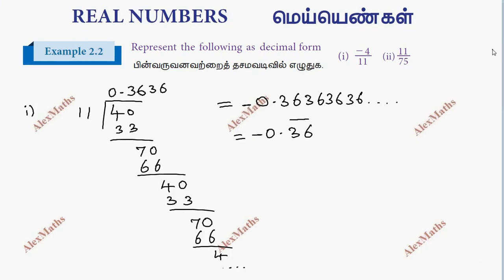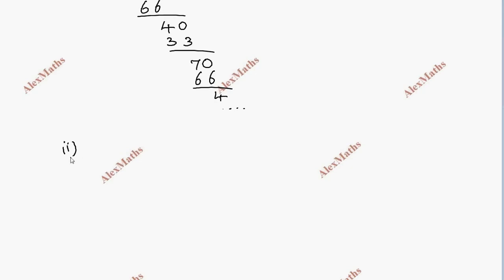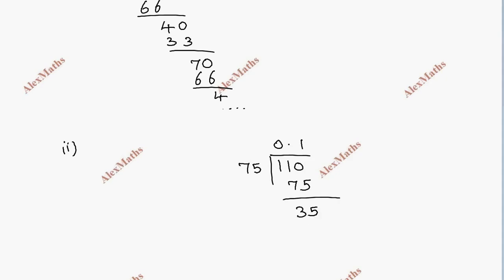For equation 2, we have 11 by 75. So we have 11 divided by 75. This is divisible. Balance is 0, then 300. Now balance 50.